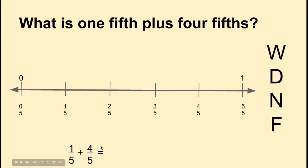Now we need to show one-fifth plus four-fifths on this number line. The first numerator is one. One-fifth is this section of the number line. One-fifth goes from zero to one-fifth on the number line.